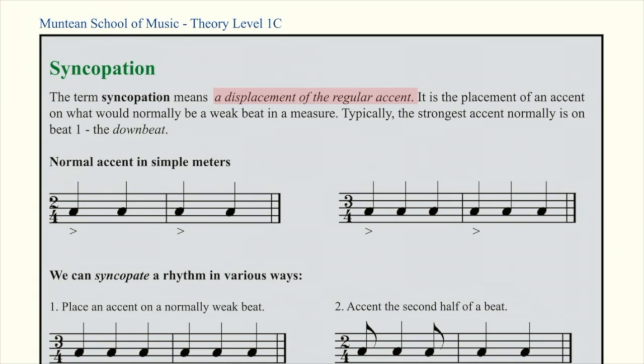Typically, the strongest accent normally is on beat 1, the downbeat. This is demonstrated here, where in 2-4, the typical strong beat is on beat 1. In 3-4, the strong beat is typically, once again, on beat 1, the downbeat of each measure, and so on for 4-4 and the other time signatures.